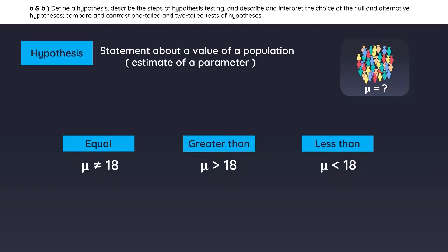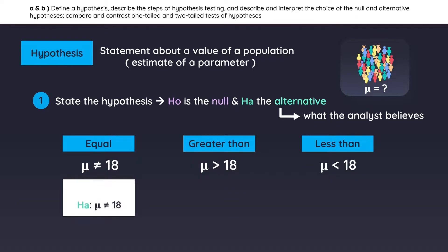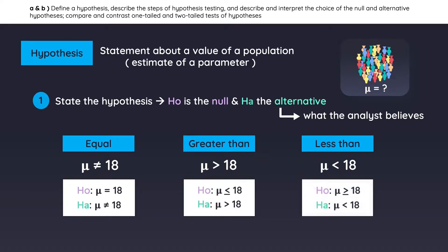The very first step in any hypothesis test is to state the hypothesis. H0 is the null hypothesis, and HA is the alternative hypothesis. A good trick to remember which is which is that whatever the analyst believes will become the alternative hypothesis. So if analyst 1 believes the mean is not equal to 18, that is the alternative and the null will be the opposite. Analyst 2 believes the mean is greater than 18, so the null is the opposite. We do the same for analyst 3.